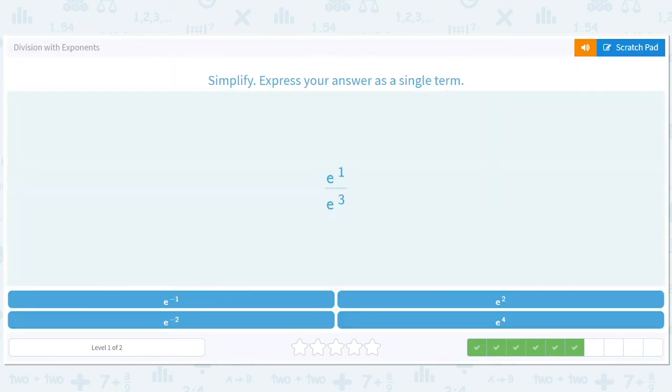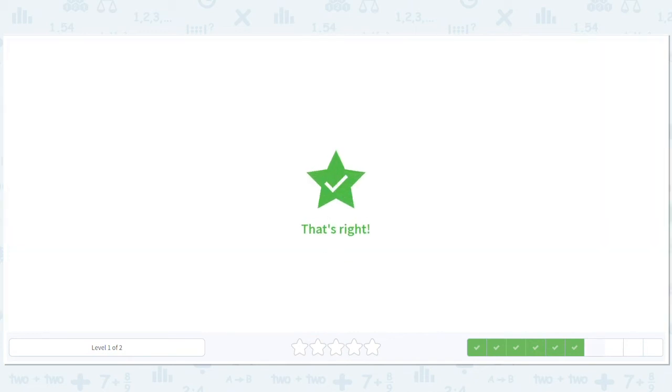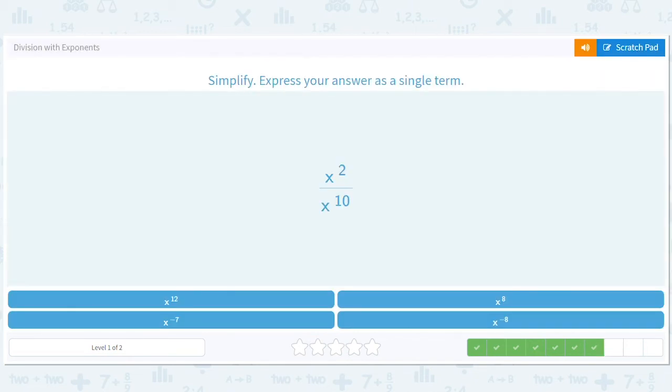Over here one minus three is negative two so e to the negative two. Two minus ten is negative eight so x to the negative eight. Five minus nine is negative four so we have y to the negative four.